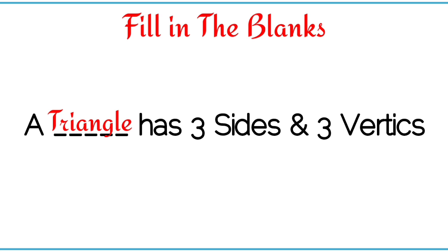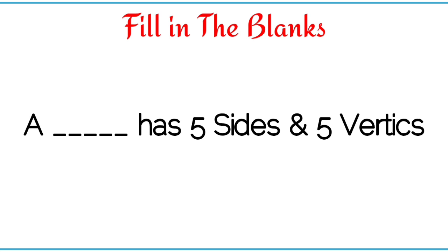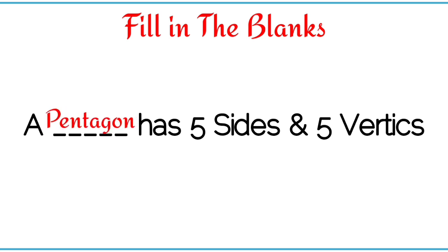A dash has five sides and five vertices. Pentagon — a pentagon has five sides and five vertices.